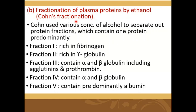Since the process of separation is of least concern for clinicians, the ethanol fractionation method is not of primary interest. However, it is a technique used by scientist Cohn, who used various concentrations of alcohol to separate protein fractions. Fraction one is rich in fibrinogen; fraction two is rich in gamma globulin; fraction three contains alpha and beta globulins including agglutinins and prothrombin; fraction four contains alpha and beta globulins; and fraction five contains predominantly albumin.